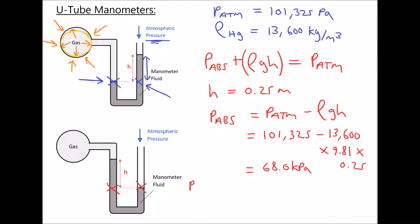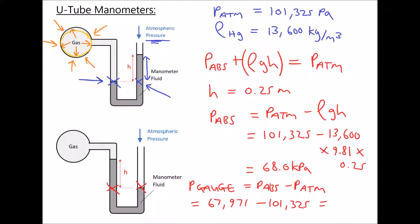But if we want to calculate our gauge pressure, the way we did that previously was absolute pressure minus atmospheric pressure. So we have 67,971 pascals minus 101,325, and what we notice this time is that we actually have a negative answer: minus 33.4 kilopascals. This is the reason why it's not a good idea to calculate gauge pressure using rho GH, because if we used rho GH we would have found the gauge pressure to be positive rather than negative.